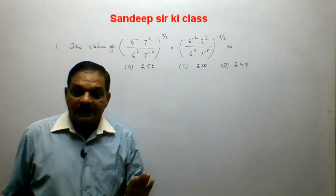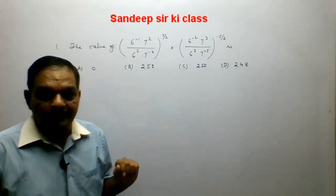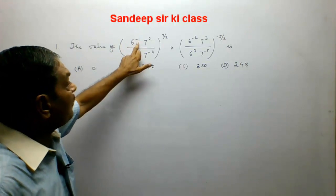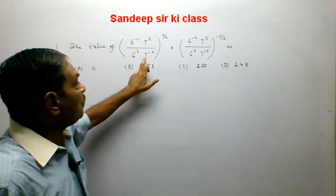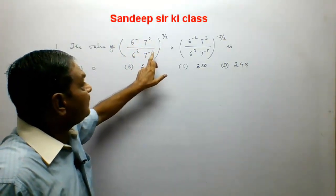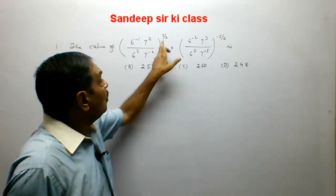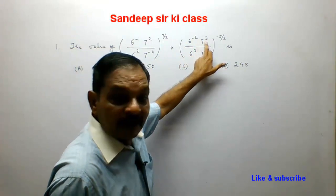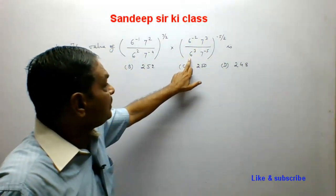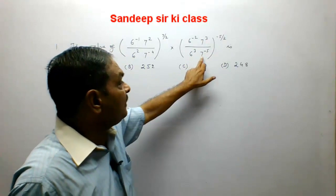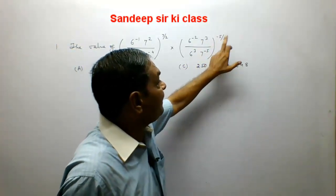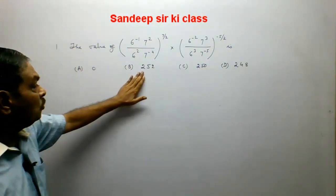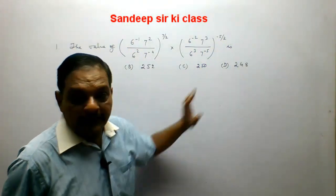Now we will see the questions of the additional question bank. The first question is: the value of 6 raised to the power minus 1 into 7 squared, upon 6 squared into 7 raised to the power minus 4, whole raised to the power 7 by 2, into 6 to the power minus 2 into 7 to the power 3, upon 6 to the power 3 into 7 to the power minus 5, whole to the power minus 5 upon 2. The options given are 0, 252, 250, and 248.